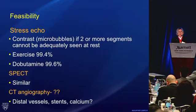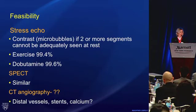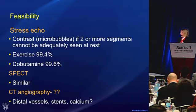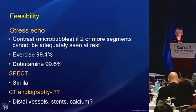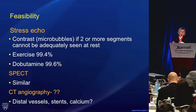Critics of echo will say you can't always see the heart. But with our current state-of-the-art technology and the appropriate use of contrast — which is microbubbles — if you can't see all the segments of the heart well, the feasibility of echo has become very high. You can see more than 99% — really similar to SPECT. As for CT angiography, we don't really know exactly what the specificity, sensitivity, or feasibility are, because of the relatively small numbers of patients in the studies and exclusions of patients due to age or coronary calcification.